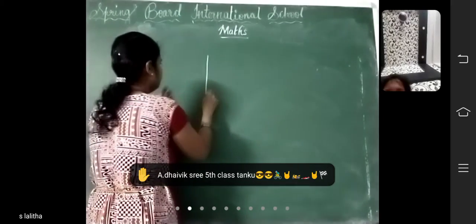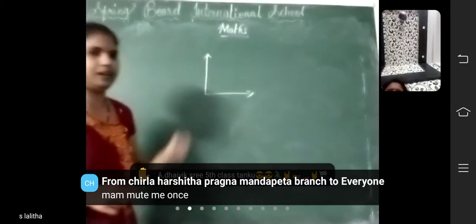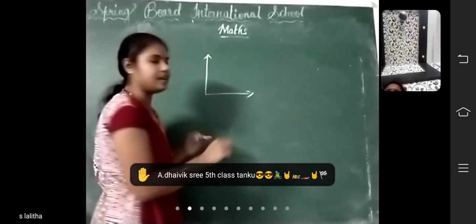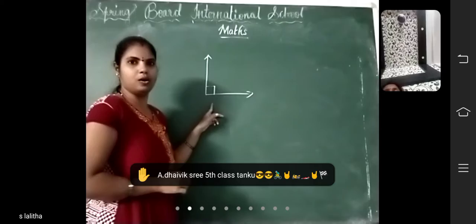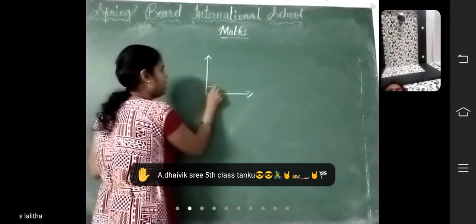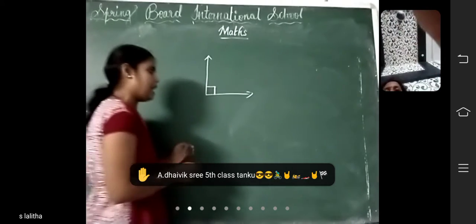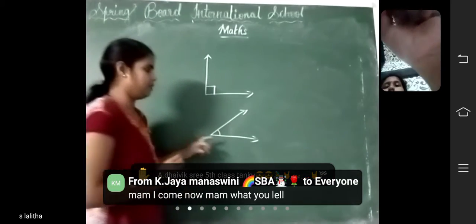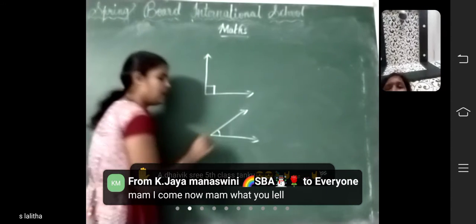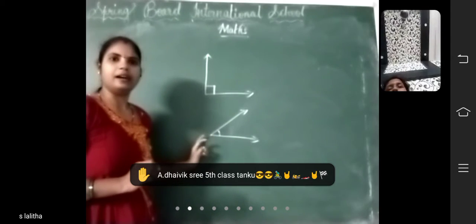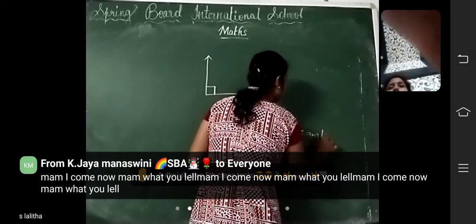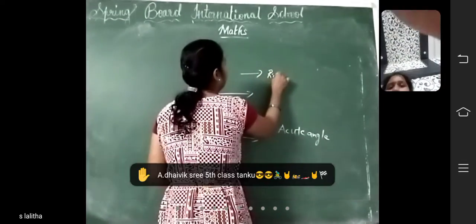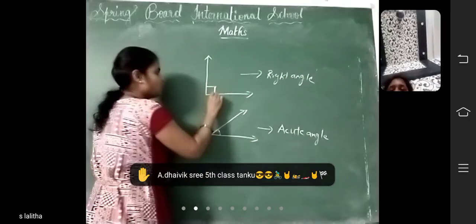How can you represent a right angle, children? Suppose I draw two rays here — horizontal ray and vertical ray. It forms an angle. You can represent a right angle with a square symbol. So you have to represent a right angle with a square. For another angle — suppose I draw here — the angle is formed and this will be represented as an arc. Which angle is it? It is smaller than a right angle, so which angle is it? Acute angle. Acute angle can be represented as an arc. And right angle can be represented as a square.